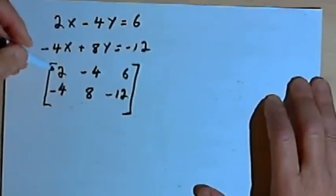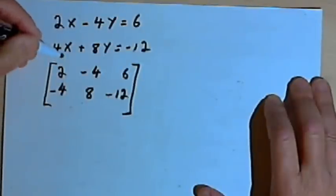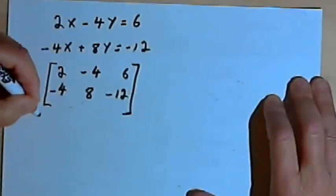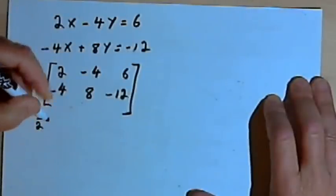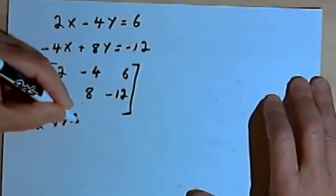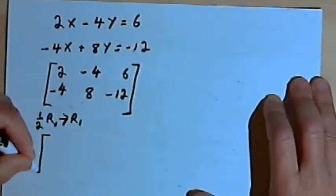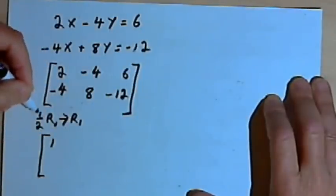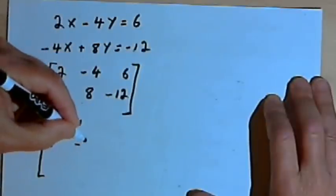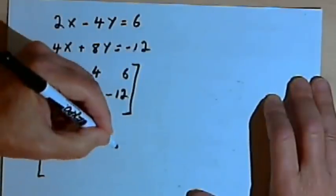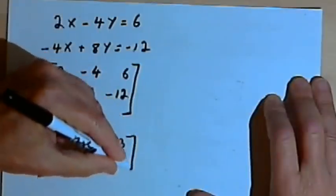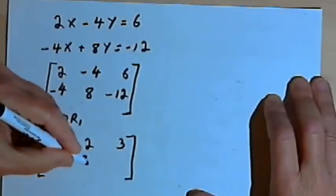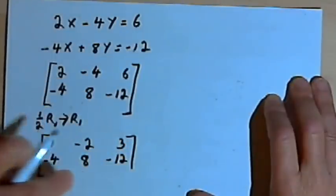My first step is to get a 1 in the first row, first column position. I'll take the first row, multiply it by one-half, and make that the new first row. So the matrix becomes: first row 1, negative 2, 3 — and the bottom row stays the same: negative 4, 8, negative 12.